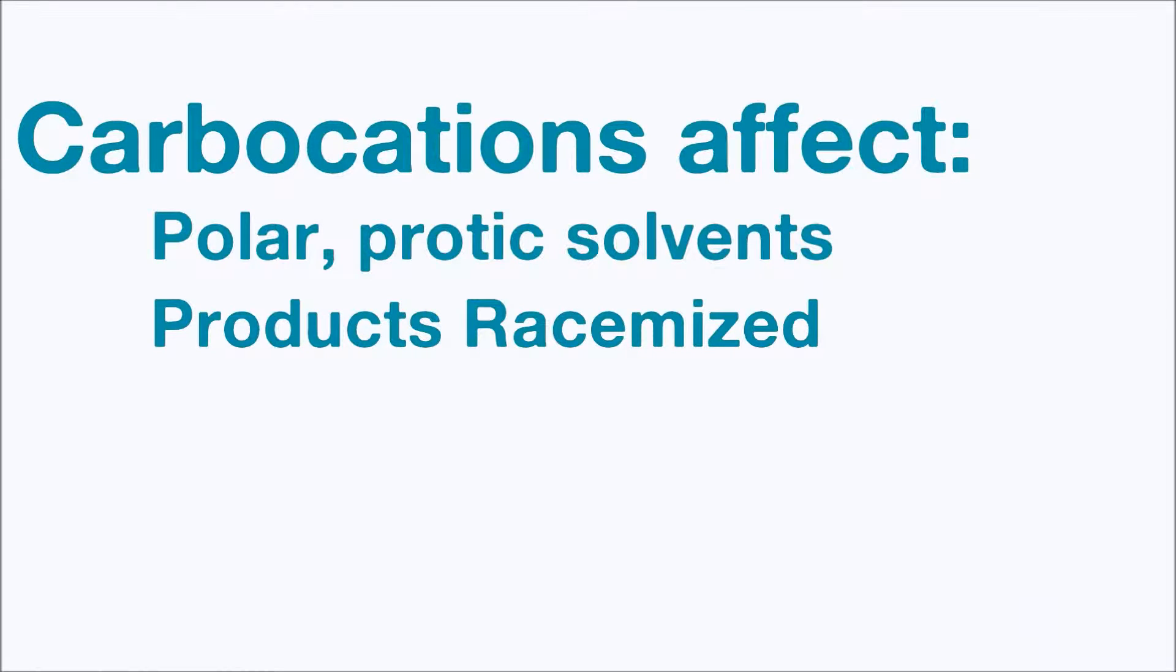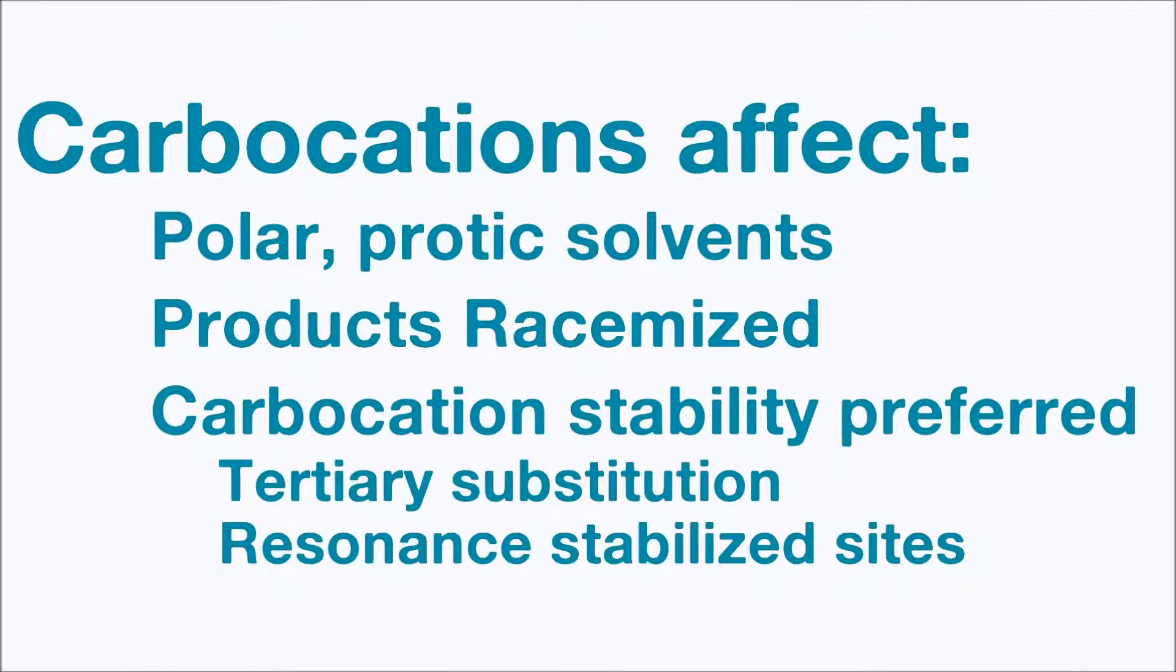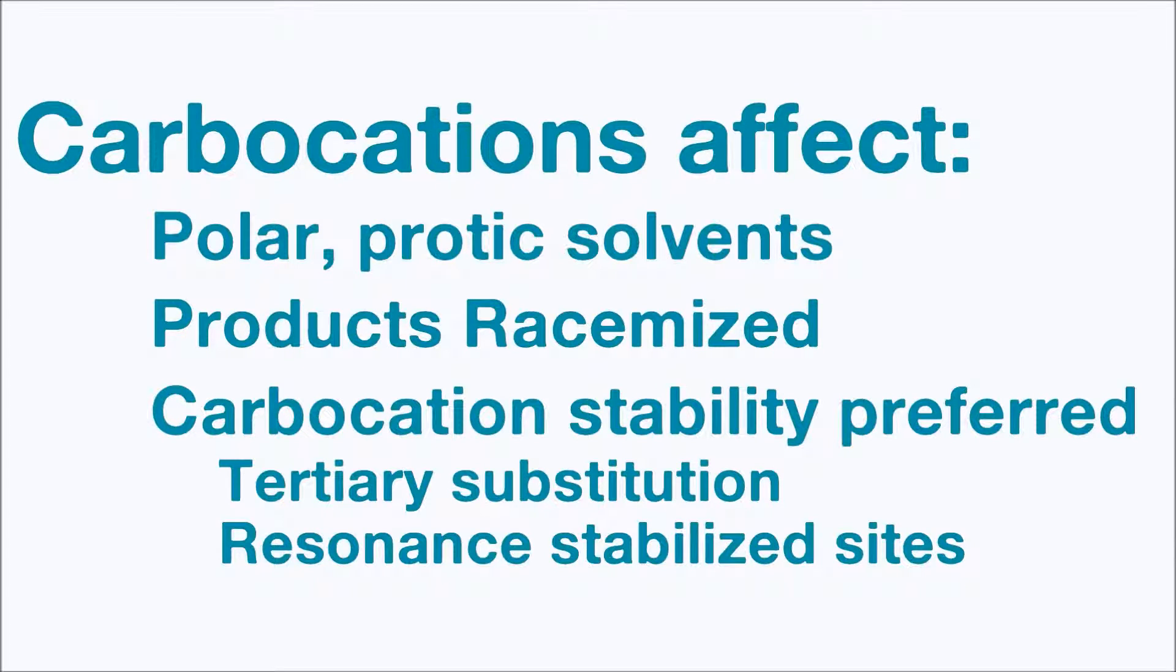The carbocation intermediate also dictates what substrates are viable for an SN1 reaction. Because tertiary carbons make the most stable carbocation, tertiary substrates will react the fastest. Primary and methyl substrates are generally unviable as SN1 reagents.